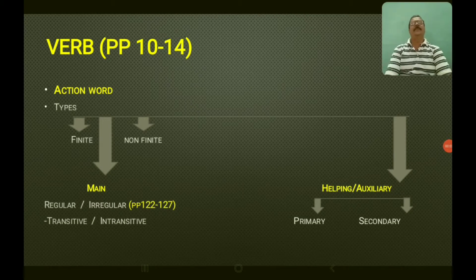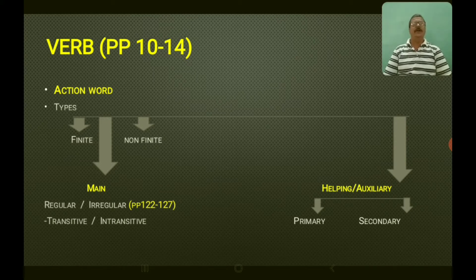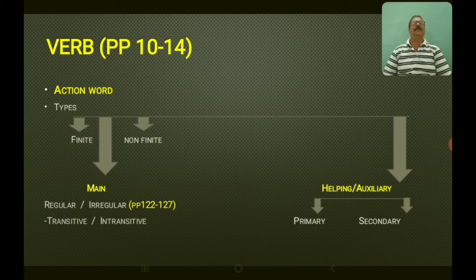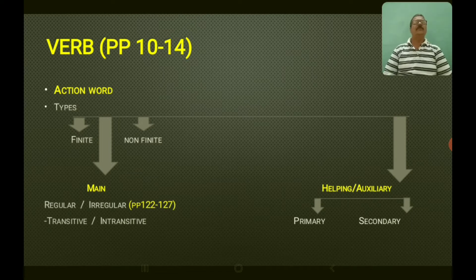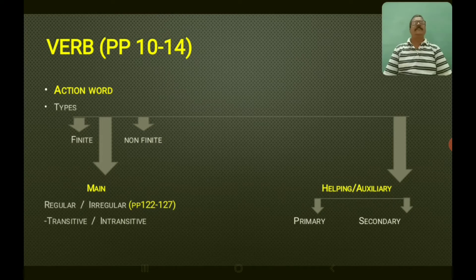Hello my dear students. Today let us learn about verbs. What is a verb? A verb is an action word, a word that denotes action. There are different types of verbs. You can watch on your mobile screen, and you can also find on the top I have written PP 10 to 14 — it refers to your workbook pages 10 to 14. You can go through them, work through them, and send me the assignment.